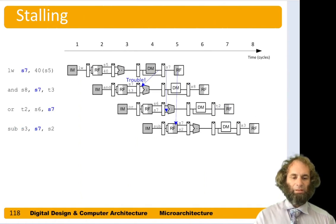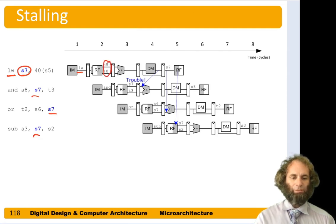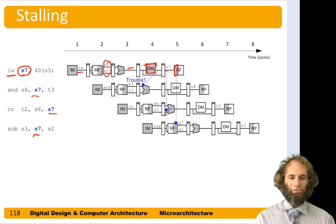Forwarding can't always be used. For example, imagine a load into S7 followed by three instructions that all use S7. The load is fetched in cycle 1, we read S5 and offset 40 in cycle 2, compute the address in cycle 3, and read from memory in cycle 4 — that's when we have the value to put into S7. However, the AND needs that value at the beginning of cycle 4, but we don't have it until the end of cycle 4, so we cannot forward. We need to stall. The OR can forward the value from the write-back stage, and the subtract can read S7 directly from the register file since it's written in the first half of cycle 5 and read in the second half.